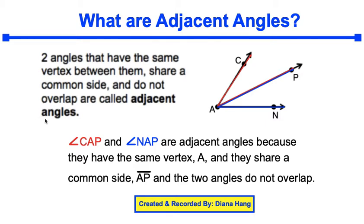So let's take a look at this diagram. I have one angle CAP outlined in red, and I have another angle NAP outlined in blue. They are adjacent angles because they both share the same vertex A, and they both share a common side AP, and the two angles do not overlap.